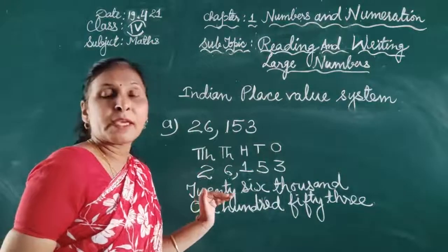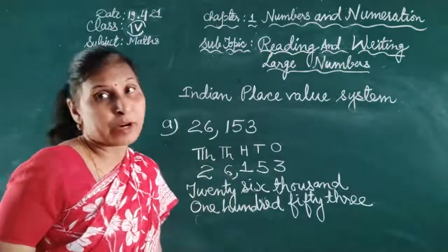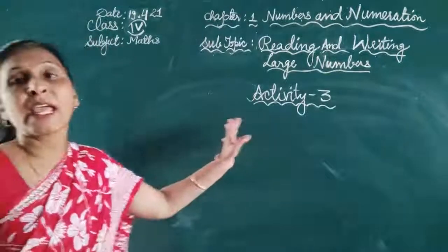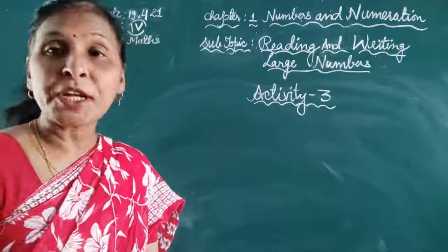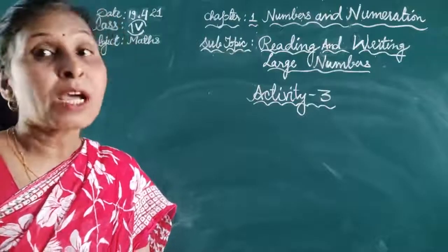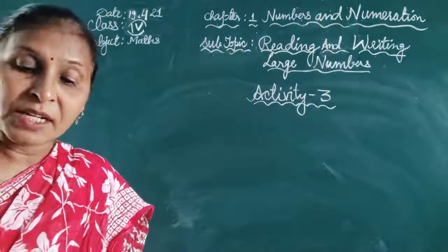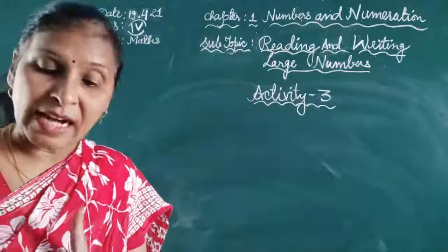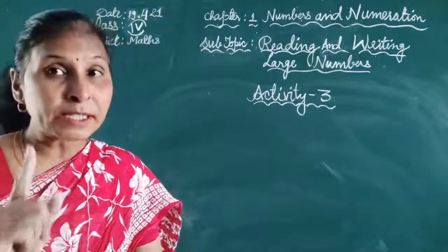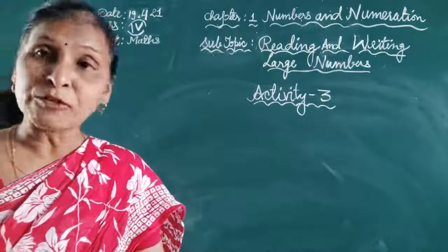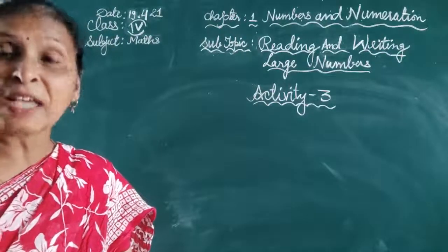In this way, any given number can be read and written in words. Now students, we start Activity 3. Please open your book to page number thirteen, question number one. I will read the question from the book — listen carefully. The question says: arrange the following numbers in the Indian place value chart and rewrite them in the blank spaces with commas at the right places.